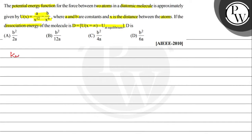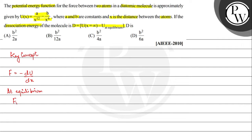The key concept here is that force is actually the negative differential of the potential energy function. At equilibrium, the net external force on the body will be equal to zero.